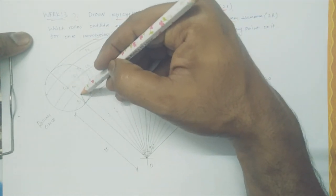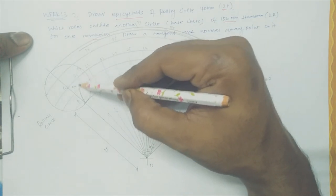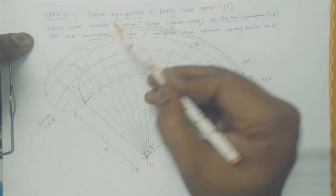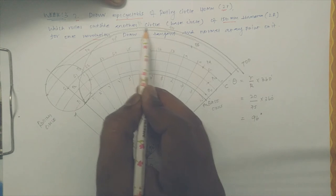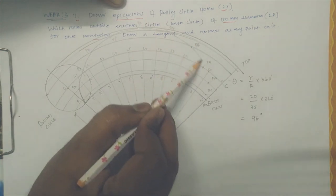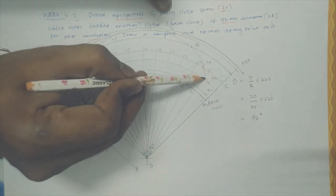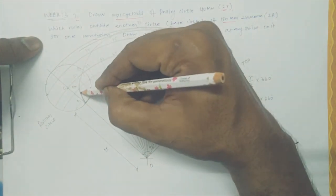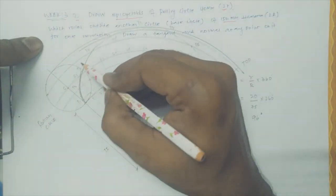So now I could write this is p1, p2, p3, p4, p5, p6, p7, p8, p9, p10, p11, and at last p12. So if you're connecting by a smooth curve, you will get an epicycloid. You should not disturb the points, you have to narrate the correct path.